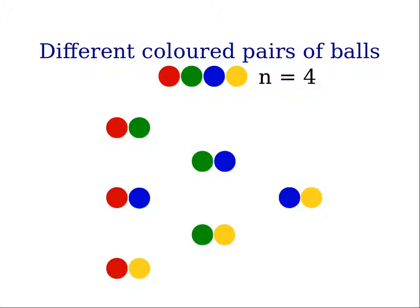Consider an example where we have four colored balls: red, green, blue and yellow, so n equals four. We have four items.